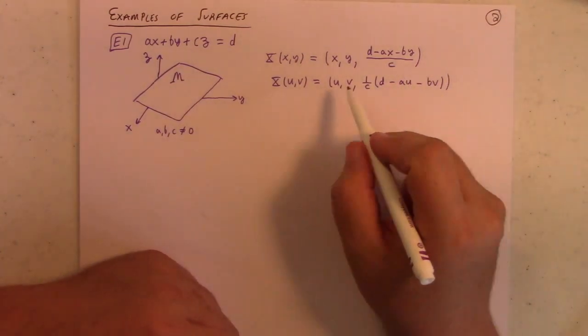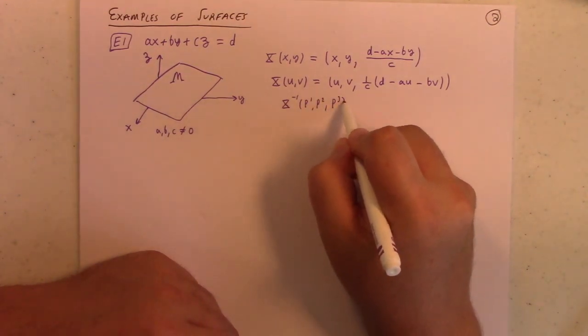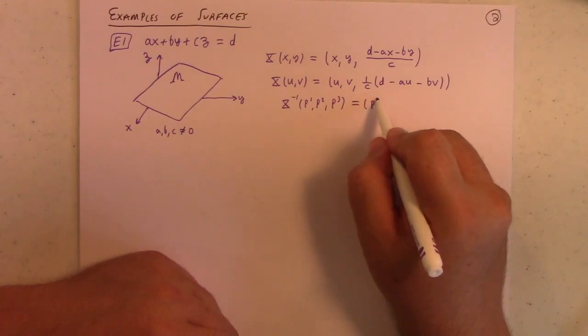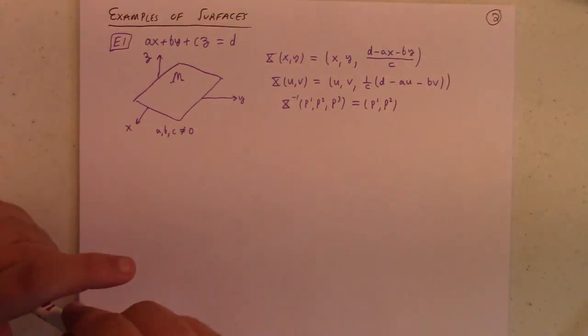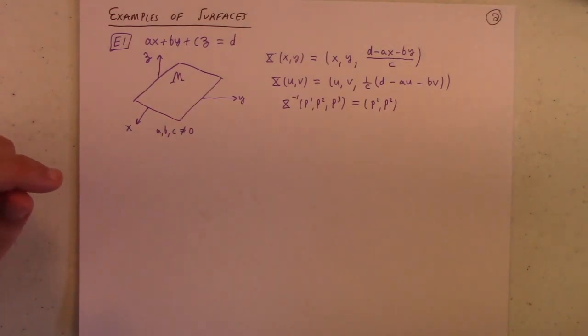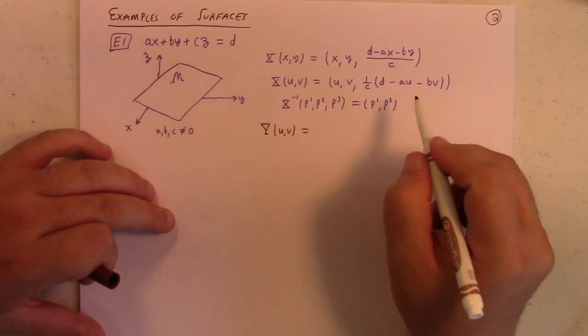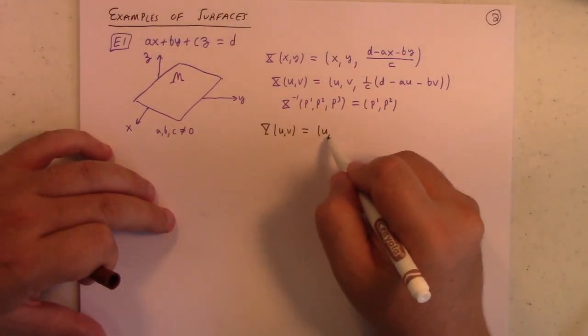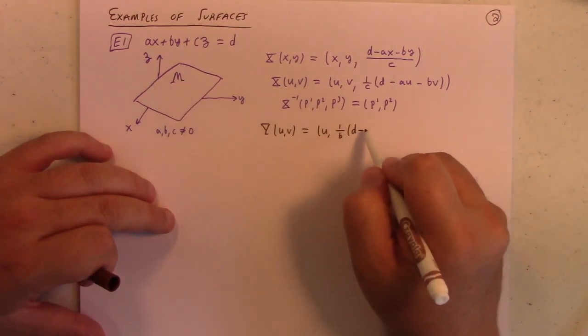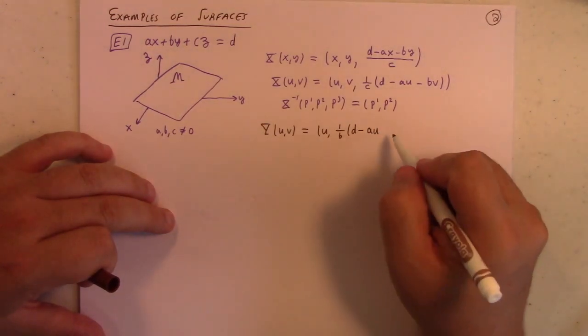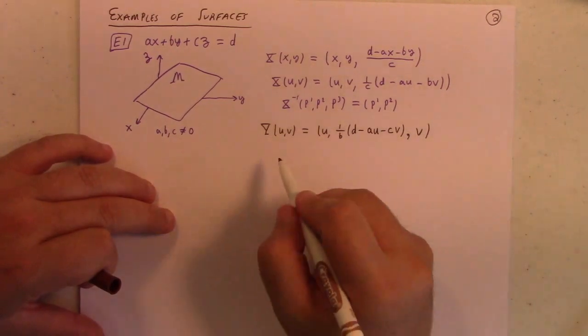It's pretty clear that the inverse is continuous because the inverse of this patch is just x inverse of p1, p2, p3. Well, it just spits back out p1, p2. So, yeah, this is a proper patch. But you can usually see that there are other ones that you could write down for this example. Like, for example, I could use y of u, v, the y not having any special significance other than just being another label. But I could do something like u and then, like, basically solve for y.